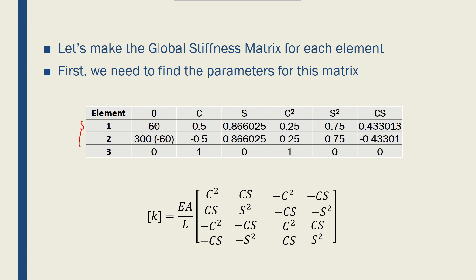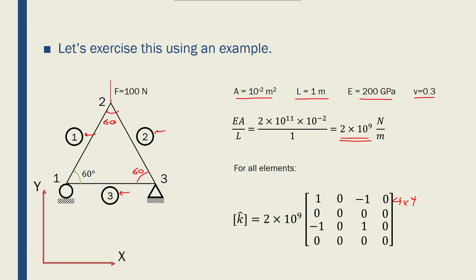Each element is at a certain angle theta with respect to the global coordinate system. If we place the global coordinate system at the first element, it's a 60-degree rotation angle. For the second element, it is at 300 degrees or equivalently minus 60 degrees. And for the third element, it's going to be zero because it lies in the same direction as x. So theta1 is 60°, theta2 is 300° (or −60°), and theta3 is 0°.